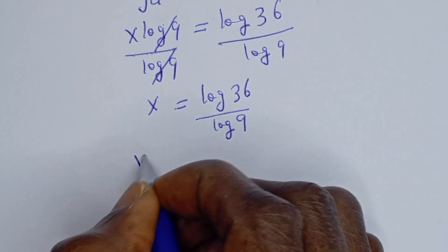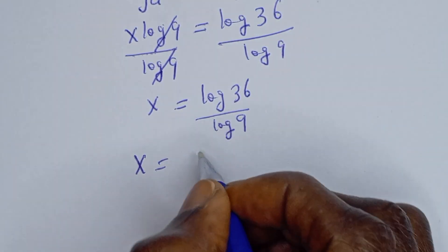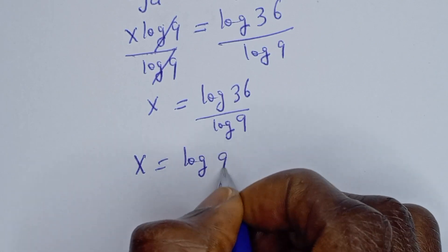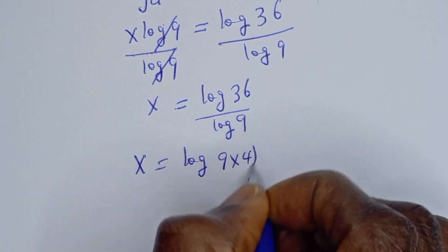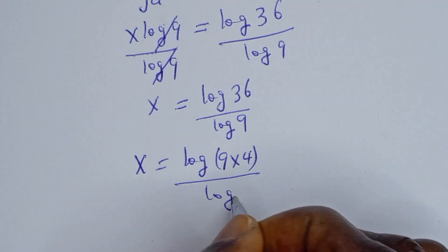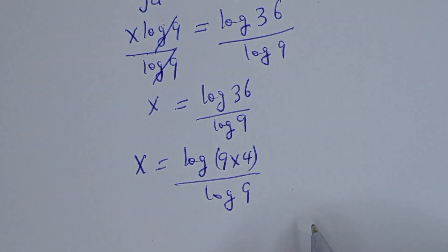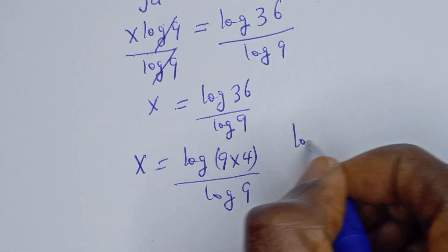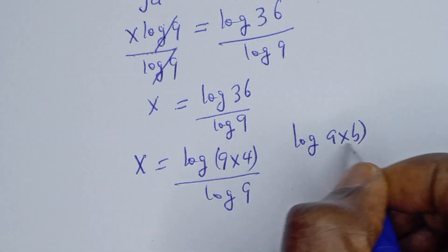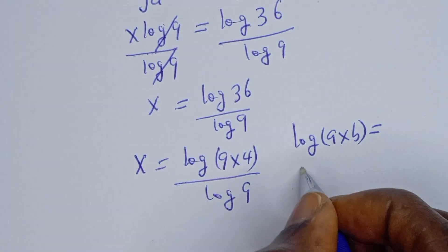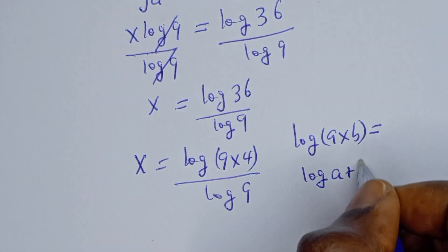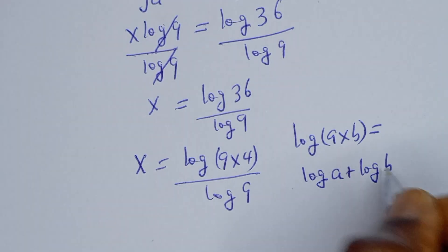Then s is equal to log 36, which can be written as log of 9 multiplied by 4, divided by log 9. Take note: if you have log of a multiplied by b, this is the same as log a plus log b.